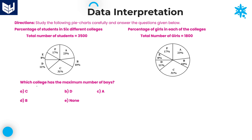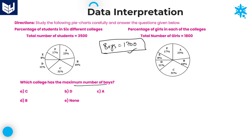Last question in this session: which college has the maximum number of boys? Total boys = 1,700. Since we want the maximum number of boys, the college with the maximum percentage has the maximum boys. From both pie charts, college C has 31%, and all remaining colleges have less than 31%. So directly the answer is option A, which is college C.